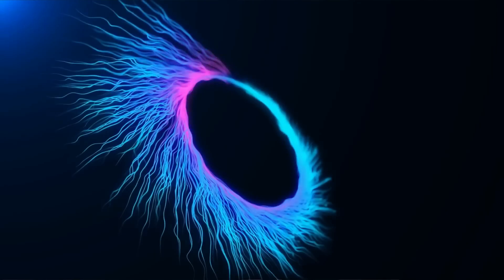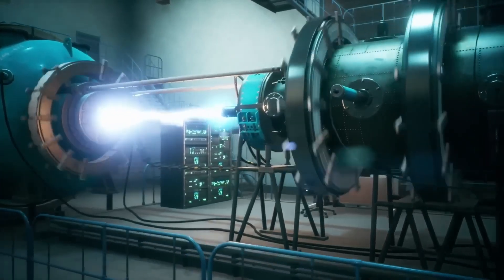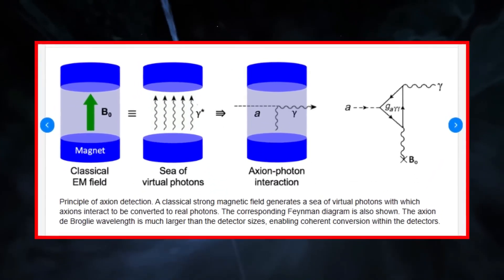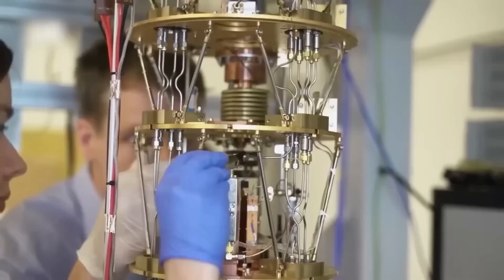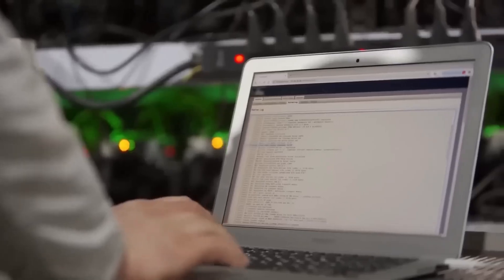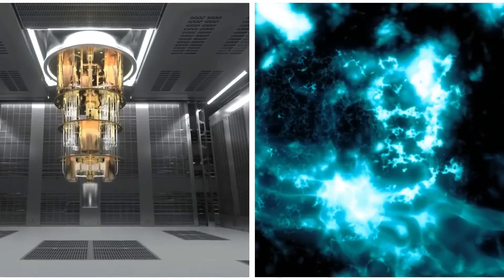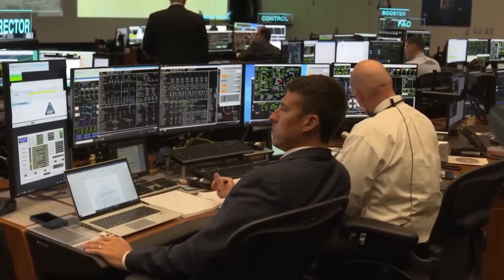But axions aren't just a theoretical fix for a mathematical issue. Many scientists believe they could be the key ingredient of dark matter. Unlike regular matter, axions don't interact with light, which makes them practically invisible. This extreme elusiveness is precisely why axions have remained hidden for so long. They interact so weakly with normal matter that traditional particle detectors, like those used to find the Higgs boson, are useless against them.